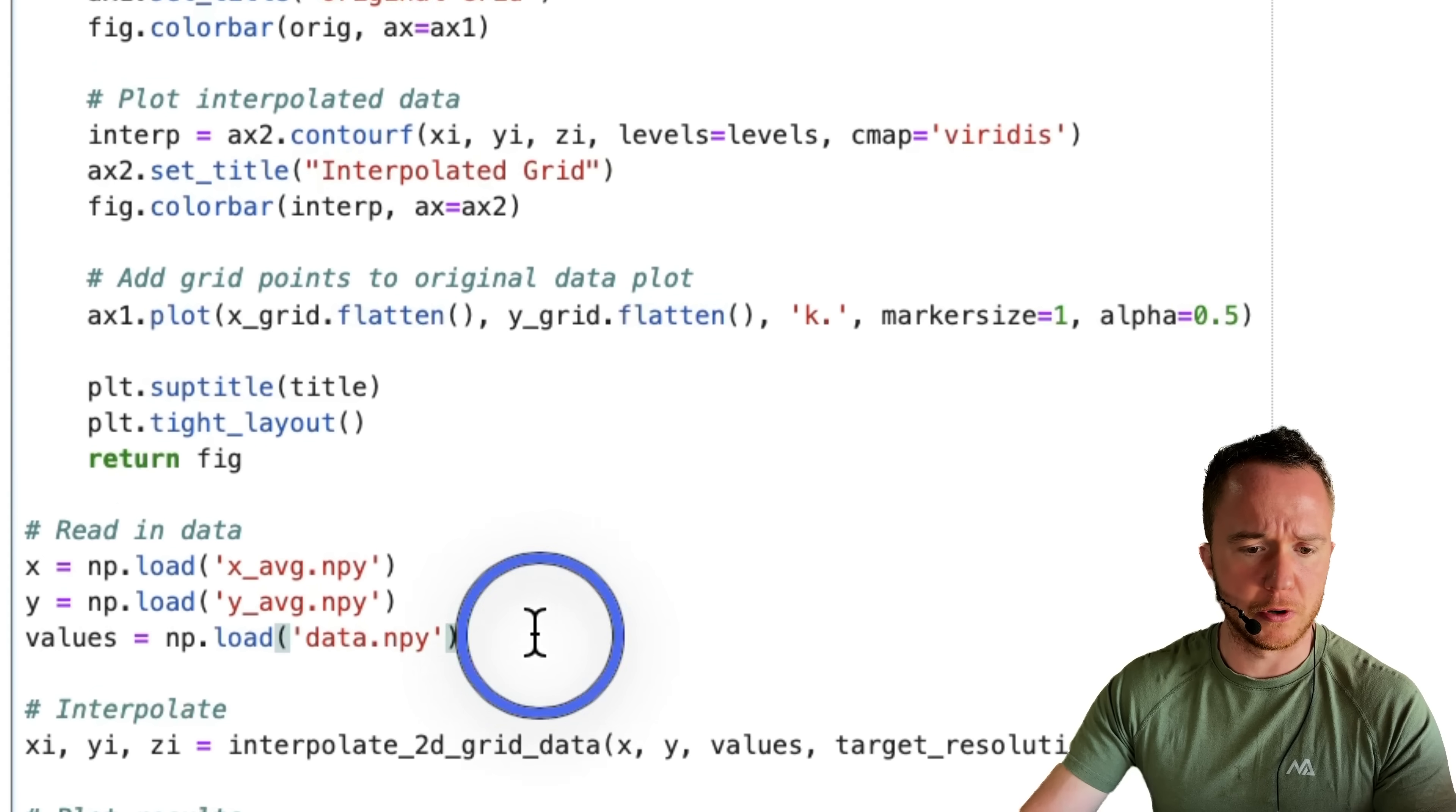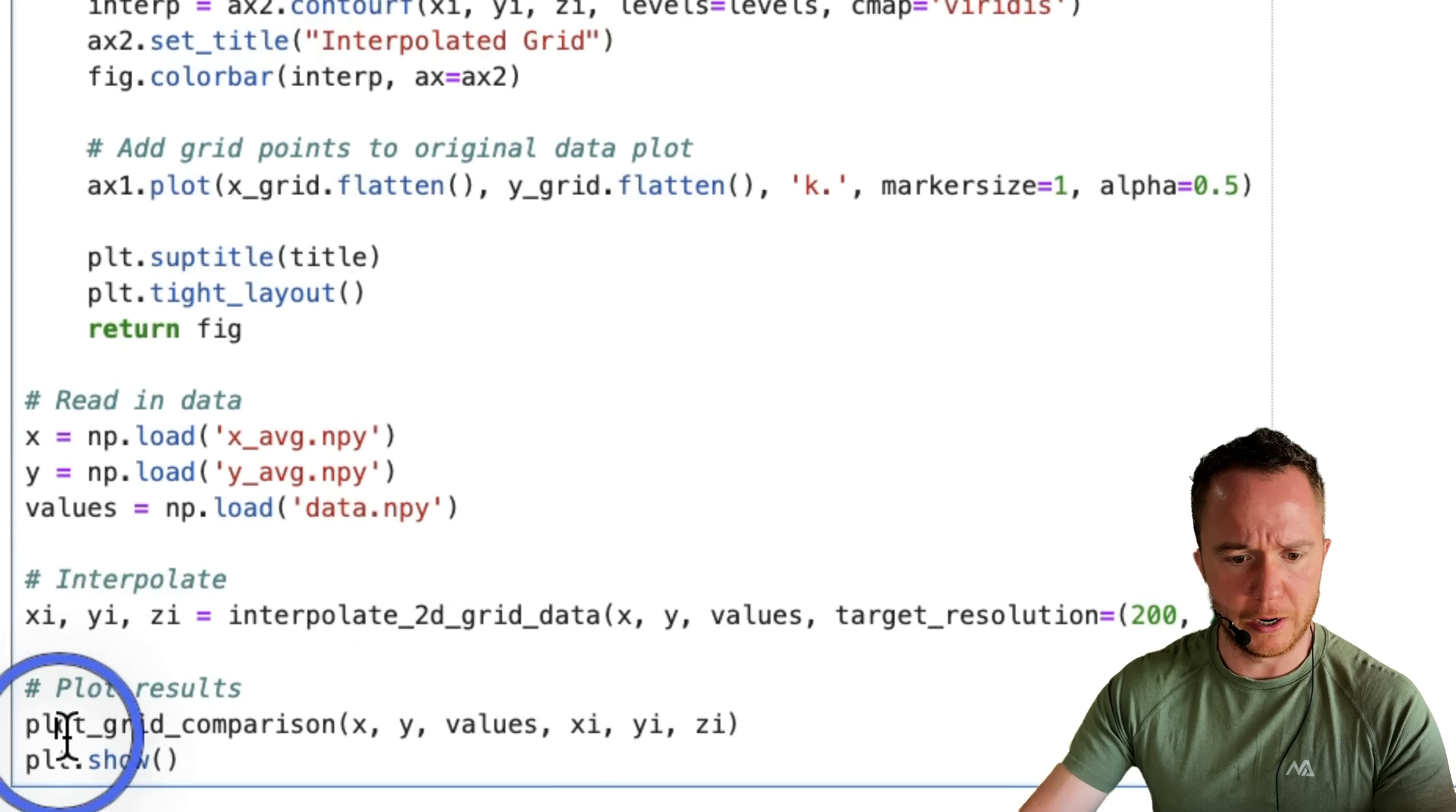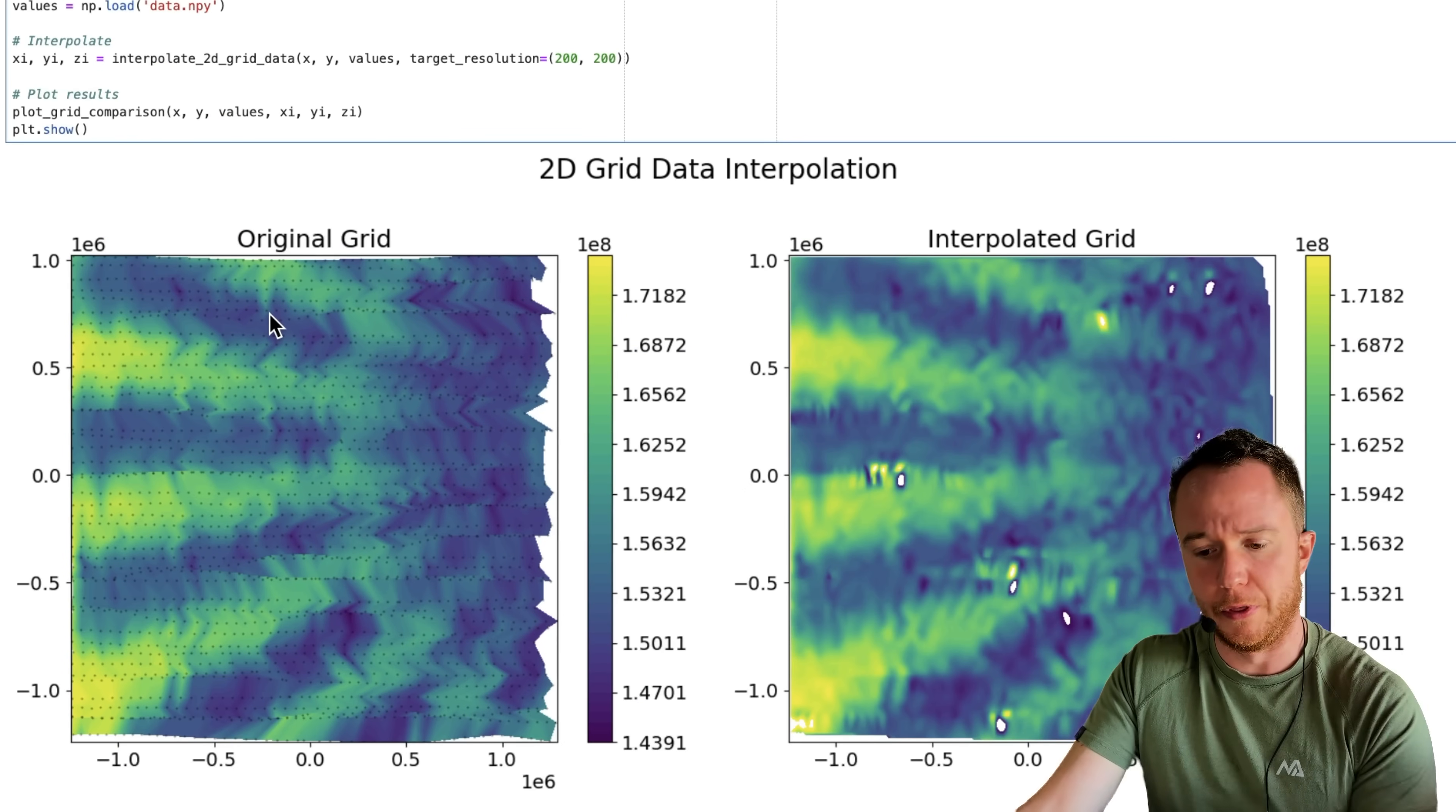So when we run this cell, we first load the data from the files, call the interpolation function, and then the plotting function, and we end up with this plot.